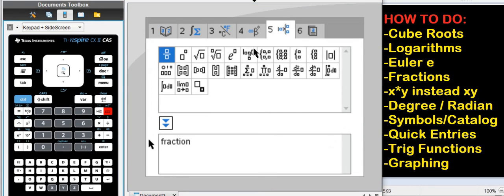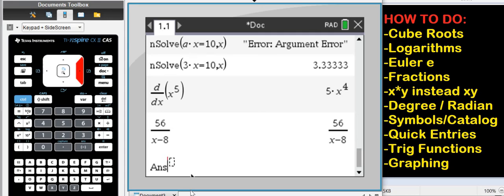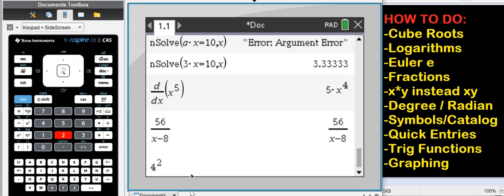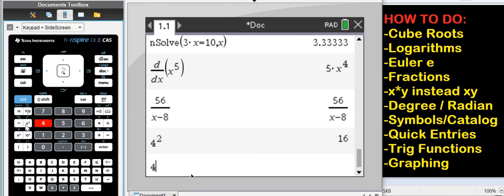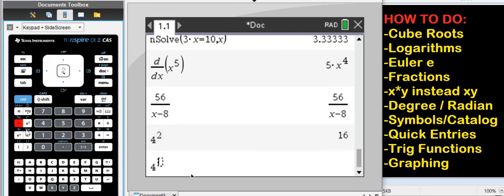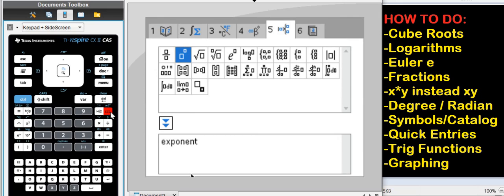You can just go to catalog, option 5, and type in a fraction. Or here, option 2 is an exponent. So if you want to type in 4 squared, you can do that. You could also enter 4 squared by doing 4, and then the exponentiation symbol, 2. So as many things in life, there's many different ways you can solve something.